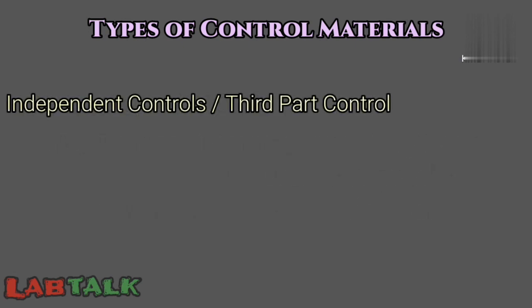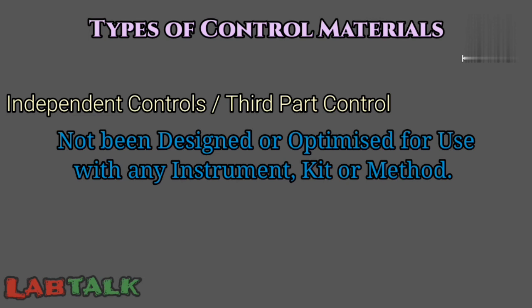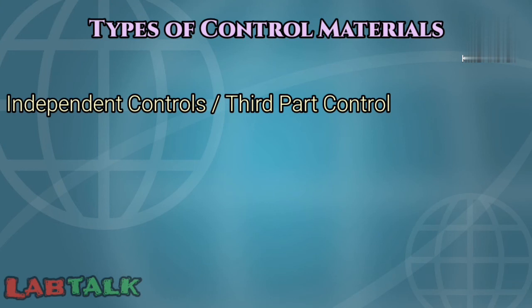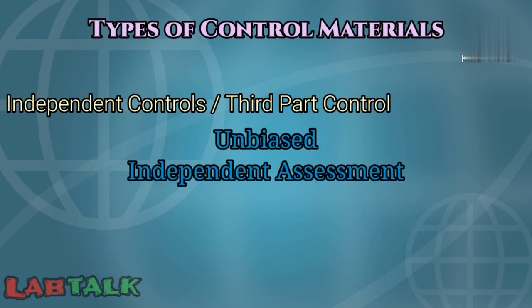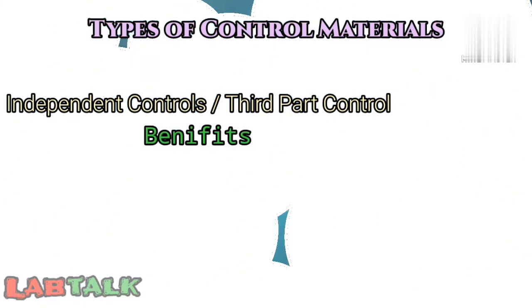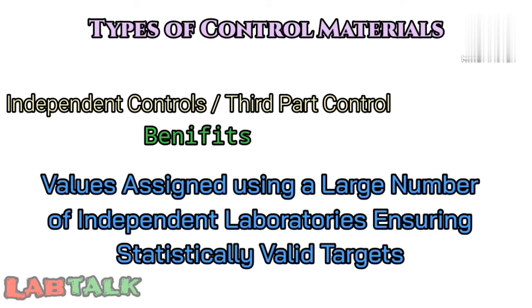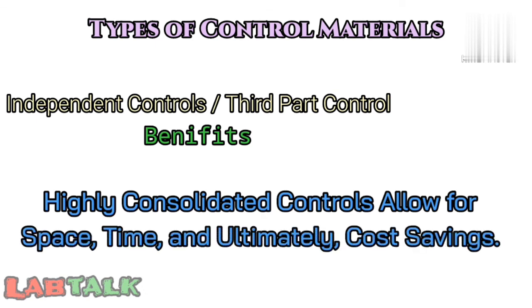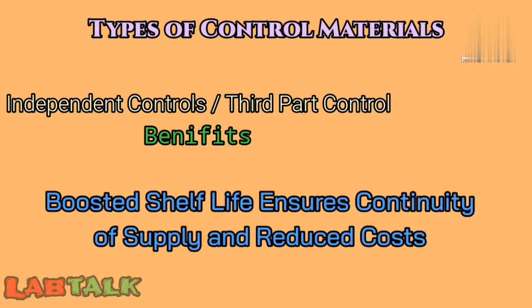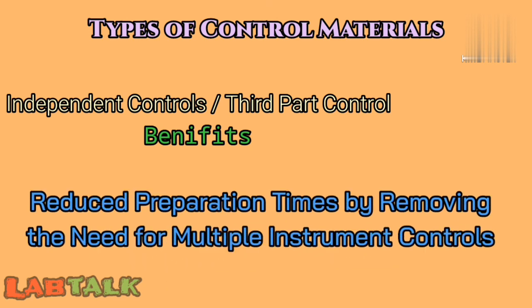The third type is independent or third-party quality control. This material has not been designed or optimized for any specific instrument, kit, or method. This independence enables the QC material to closely monitor patient sample performance, producing an unbiased assessment of analytical performance across multiple platforms. Key benefits include values assigned using a large number of independent laboratories ensuring statistically valid targets, consolidated controls saving space, time, and cost, boosted shelf life ensuring continuity of supply, and reduced preparation times.